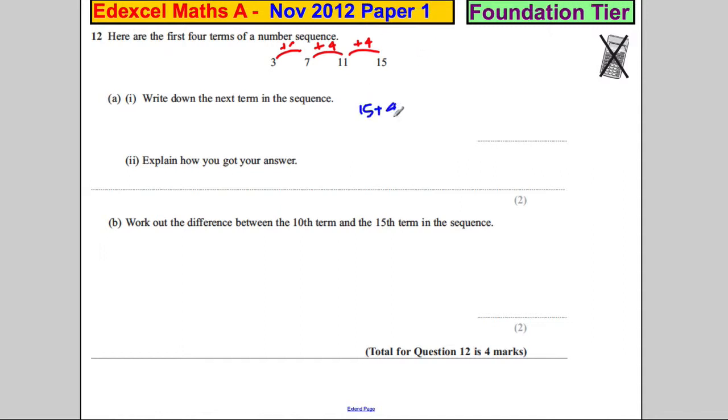So it's going to be 15 plus 4, which is equal to 19. Explain how you got your answer. And you could just write: four more added each time.